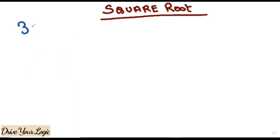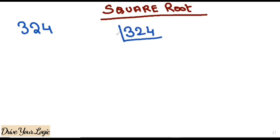The number is 324. The square root of 324 is what we need to find — that is, the number whose multiplication with itself gives 324. Let's find it. First, write down 324 and do the prime factorization process — dividing this number with prime numbers only.